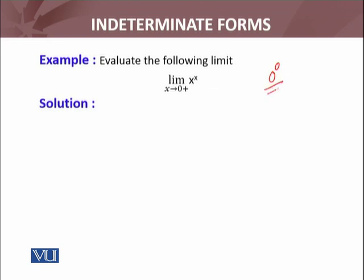Here 0^0 form बन रहे है, but x raised to power x can be written as e raised to power (x log x). इसको मैं इस तरह define कर सकता हूँ, क्योंकि log की properties use करके x^x बनेगा — log और e एक दूसरे के anti-function हैं. So limit x approaches to 0 from the right side equals limit x approaches to 0 from the right side of e^(x log x).